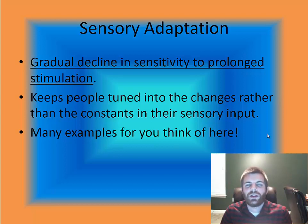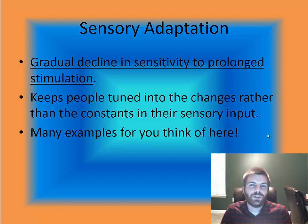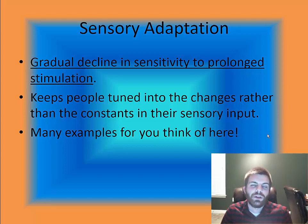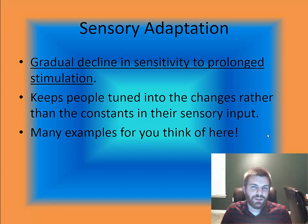Sensory adaptation allows your body to stay tuned to changes in sensory input rather than constants. Interestingly, your eyes are the only part of the body that do not experience sensory adaptation — they react to so much stimulation that they are constantly making tiny movements left and right. That concludes this lesson on basic sensation and perception. Next time we'll look at components of the eye, perceptual processes, and the ear and other forms of sensation.